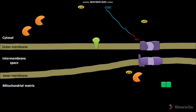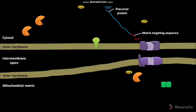This is a cytosolic precursor protein synthesized on cytosolic ribosomes. This precursor protein has an N-terminal matrix targeting sequence, which targets the precursor protein into the mitochondrial matrix.